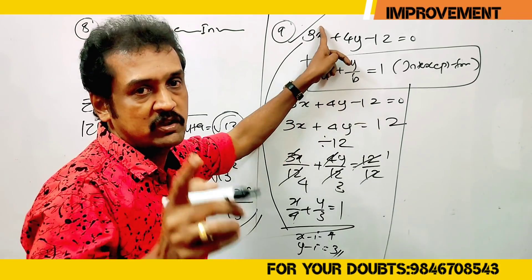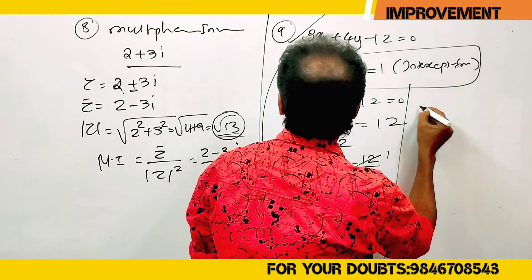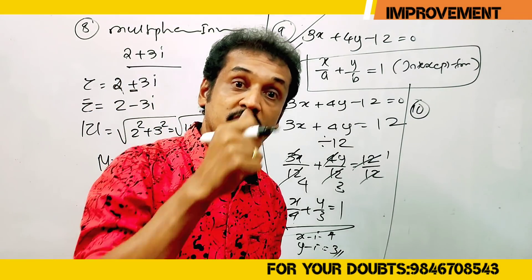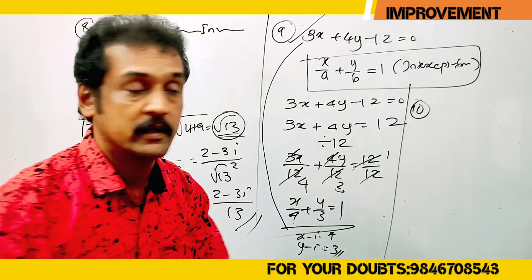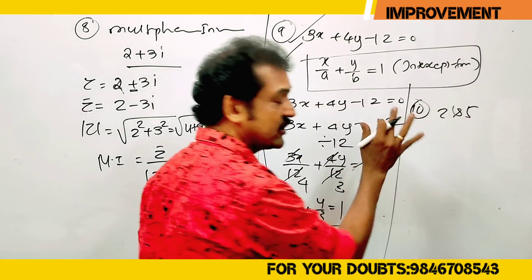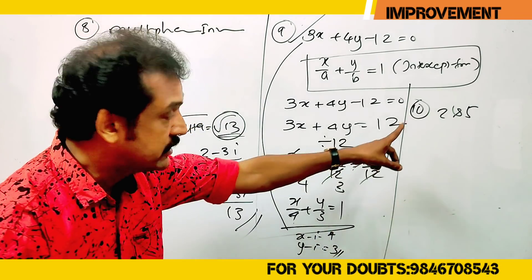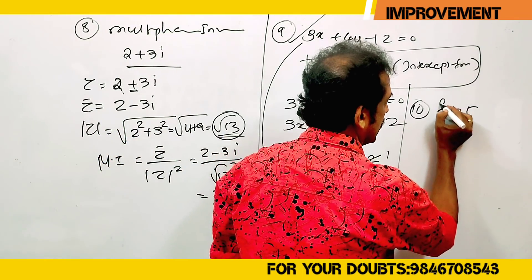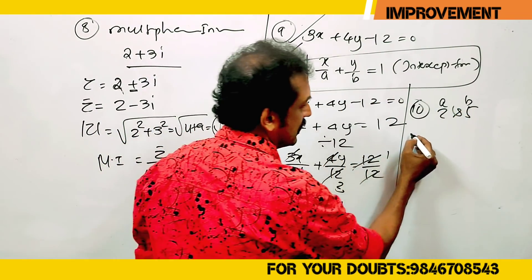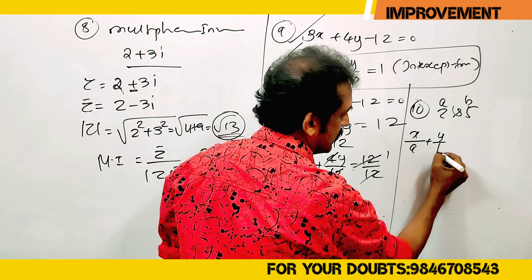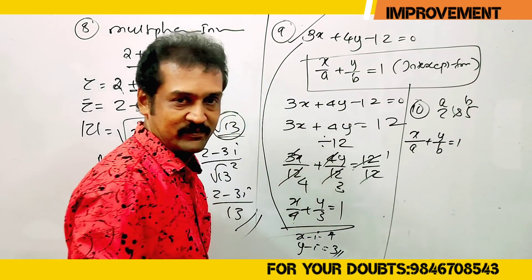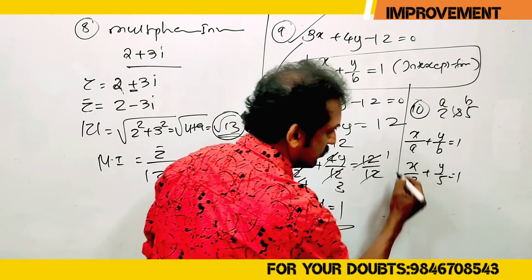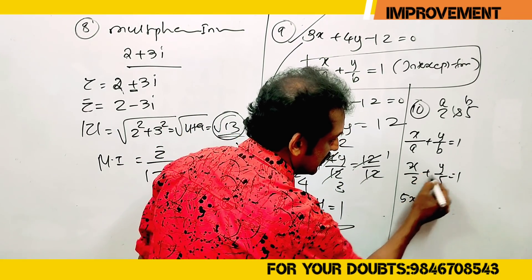Now the second question: find the equation of a straight line whose intercepts are 2 and 5. Using intercept form x by a plus y by b equals 1, with a equals 2 and b equals 5, we get x by 2 plus y by 5 equals 1.